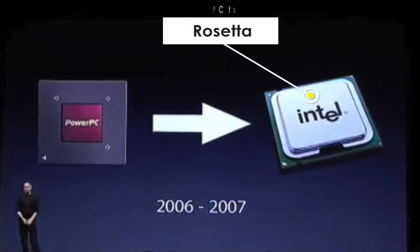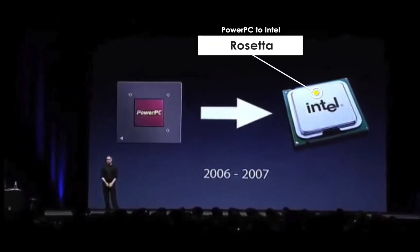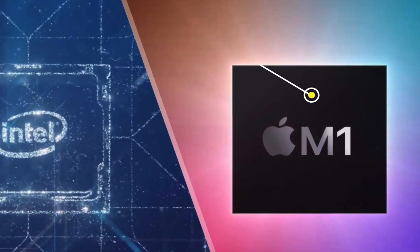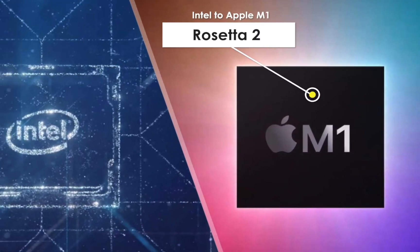So Apple created an emulator to help with the transition. Rosetta was the first emulator Apple used to switch from PowerPC to Intel, and now Rosetta 2 handles the switch from Intel to M1.